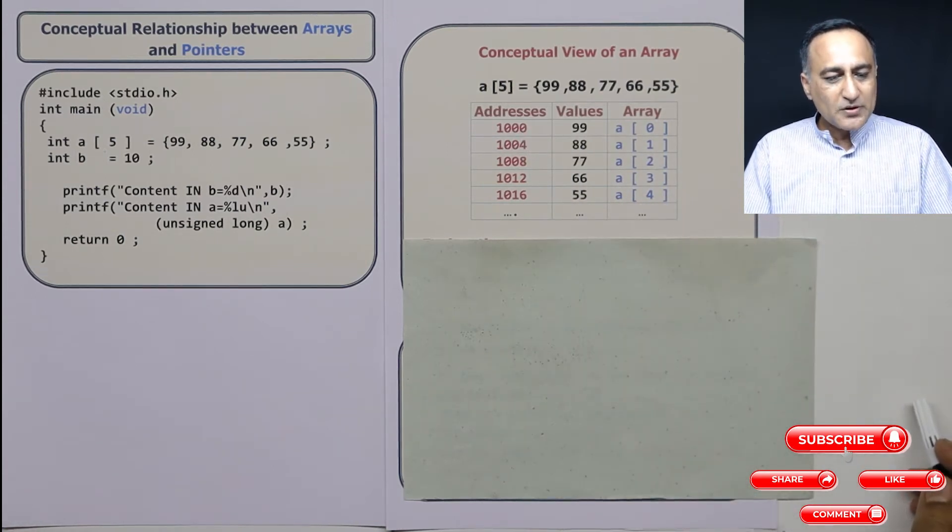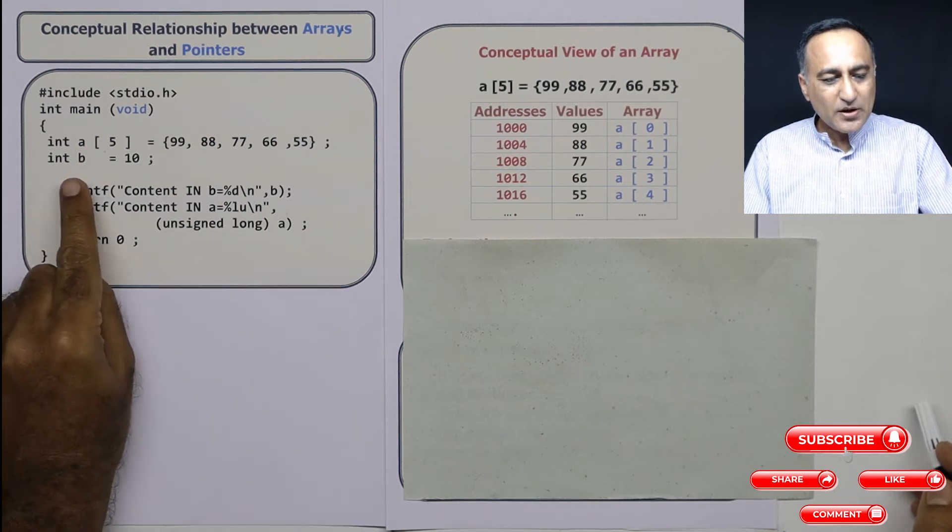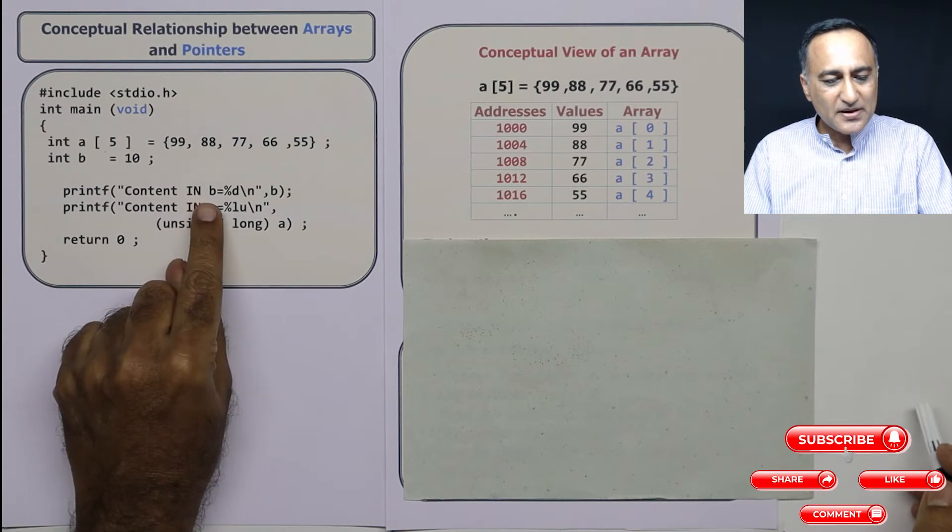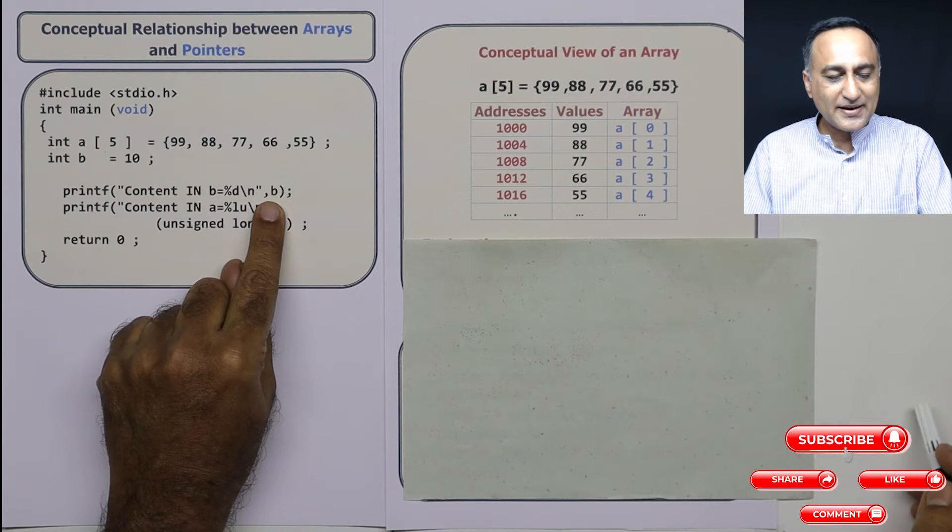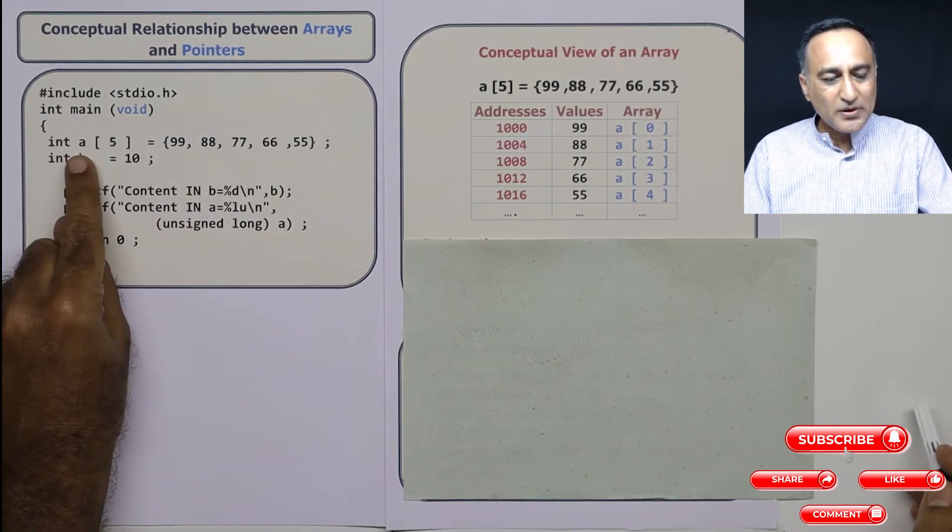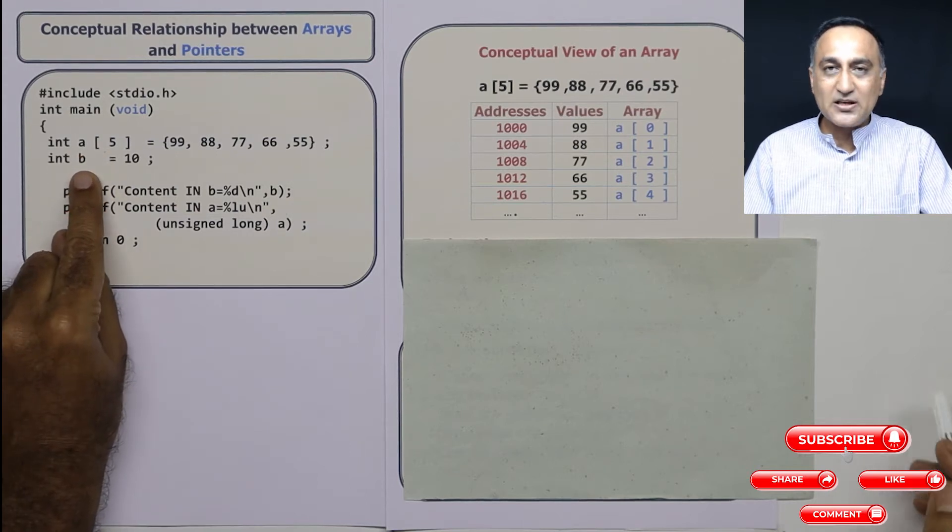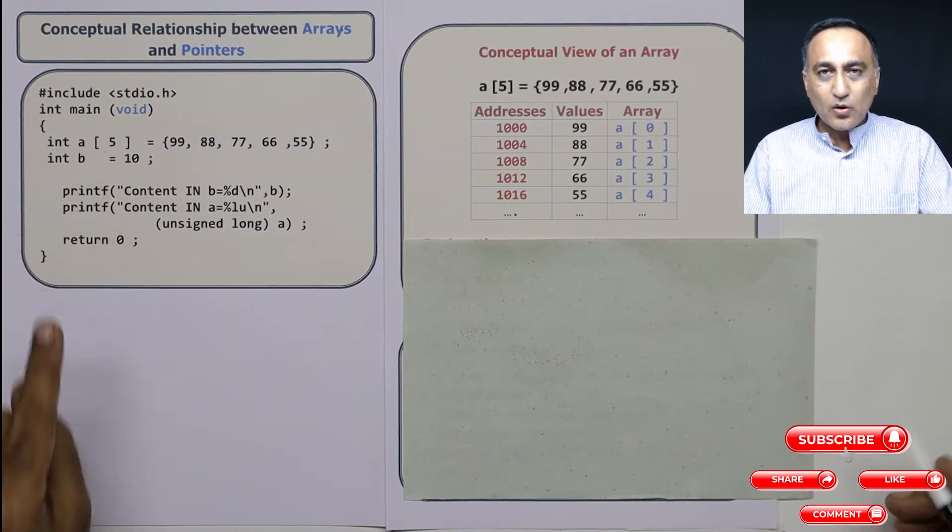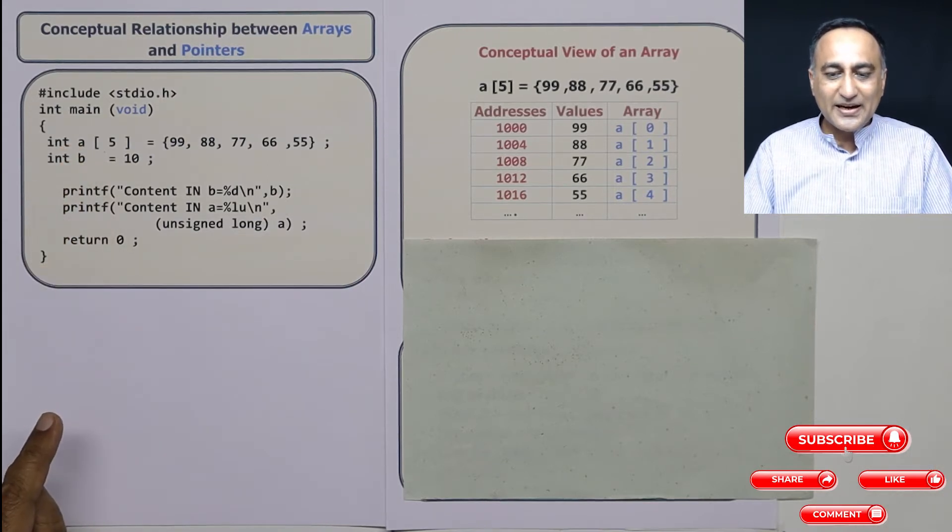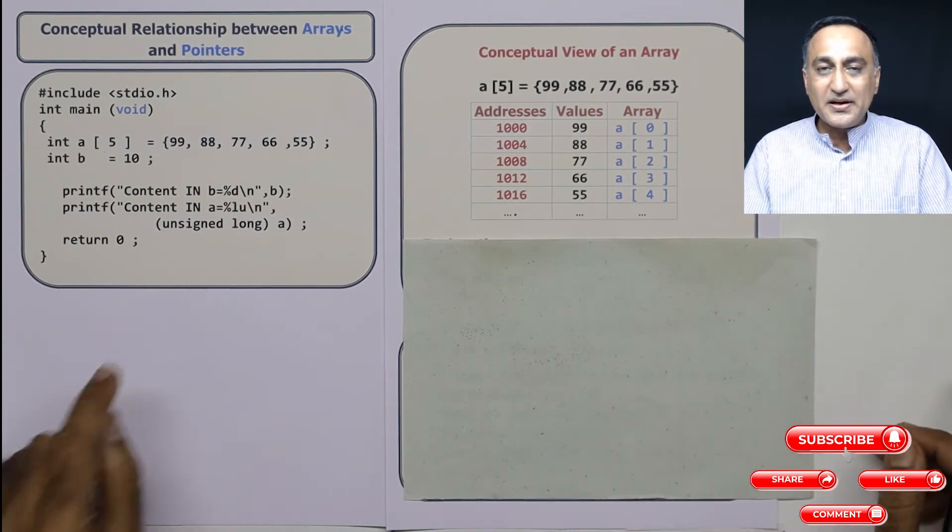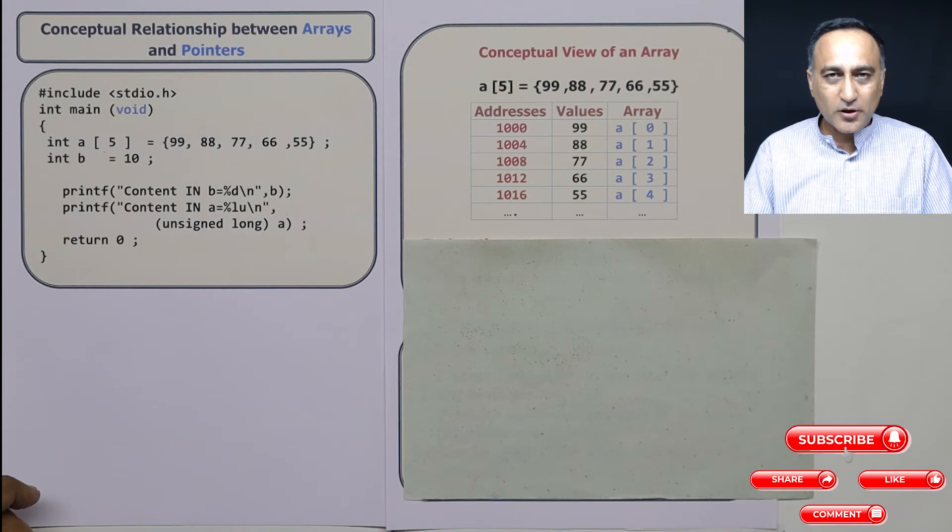Now what we shall try to do is, we shall declare another variable B with the initial value 10. So first when I go ahead and print this value in B, it is simply going to print 10. Now same thing I am trying to do with A. The only difference is A is an array, this follows a normal integer variable. So when I print A, what the compiler does is, it prints the address 1000, that means it prints the address of the zeroth location.